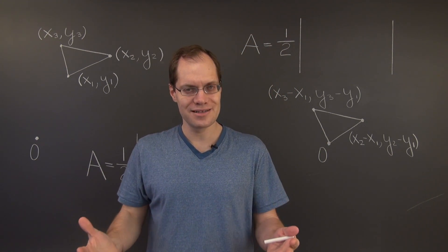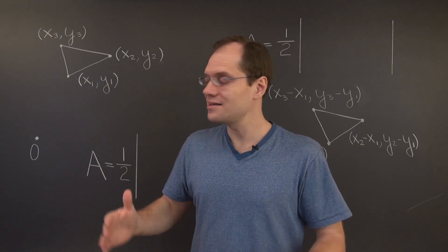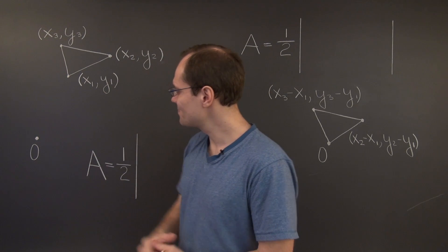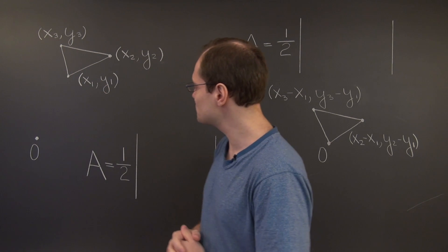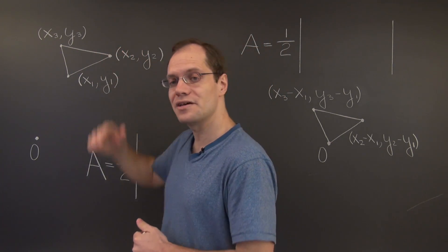How do we do this algebraically? Well, algebraically, this translation can be carried out by subtracting a1, the vector pointing to this vertex right here, from each of the other vertices.